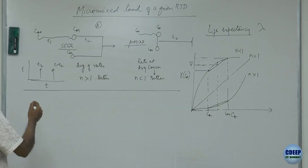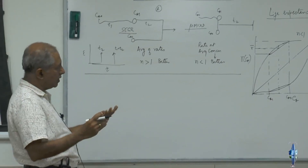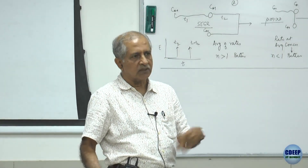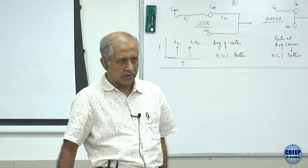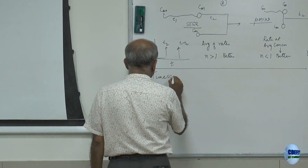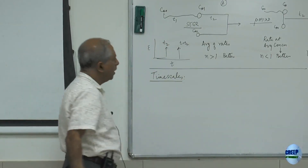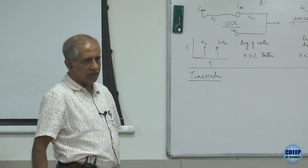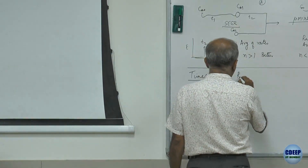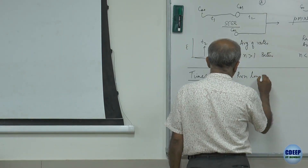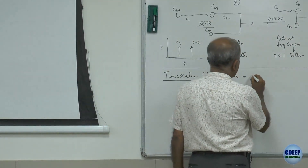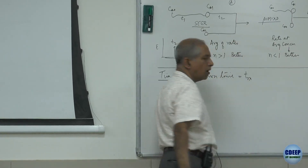Before that, let us look at how we can assess based on some characteristic times when micromixing is important and when it is not — of course, aside from the order of reaction. If you think about it, there are three important time scales that decide the performance of a vessel in reaction. One is the characteristic reaction time, TRx.